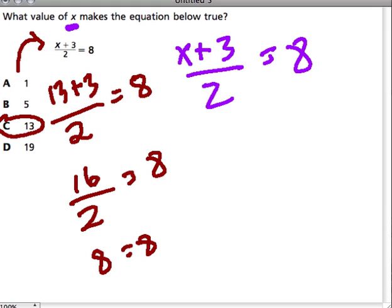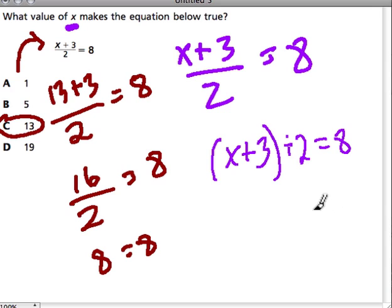But what if we didn't have multiple choice? How would we figure this out? I think of this as x plus 3 being one term, and we're dividing it by 2 to get 8. So that means that 8 times 2 would have to give me what's in the parentheses.